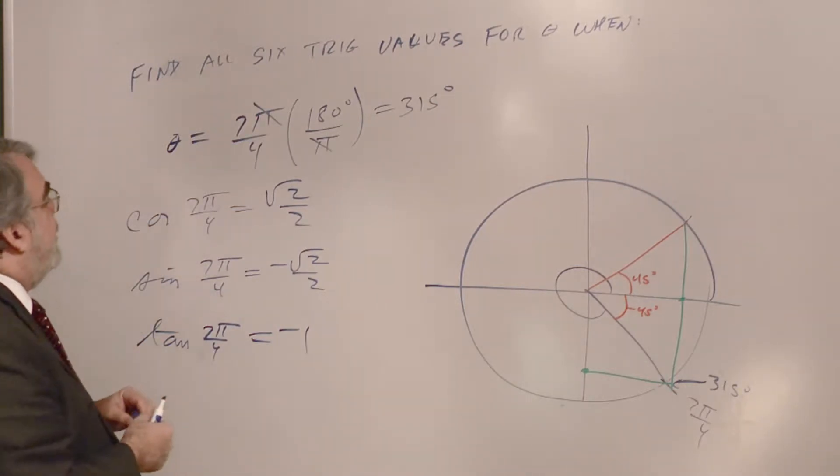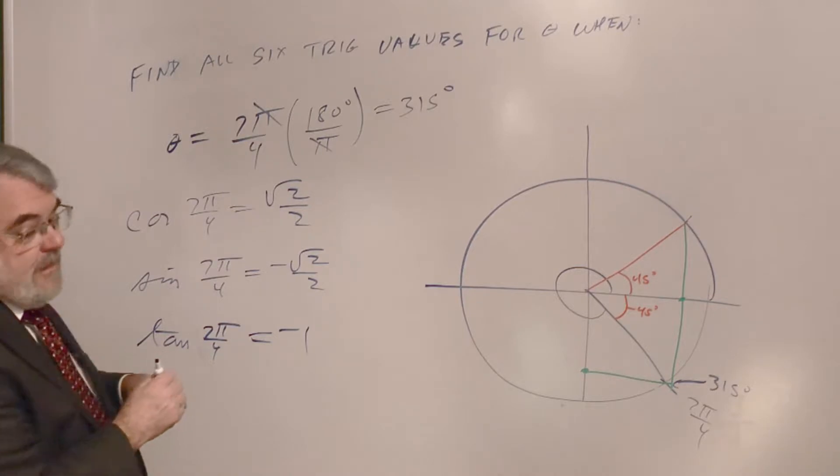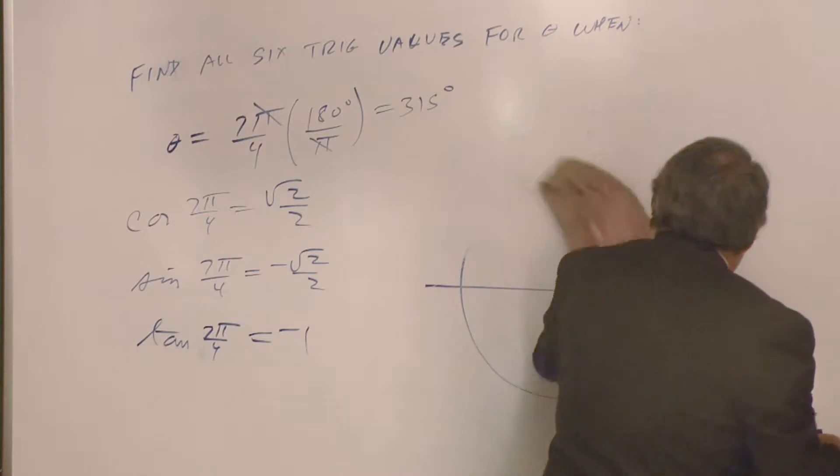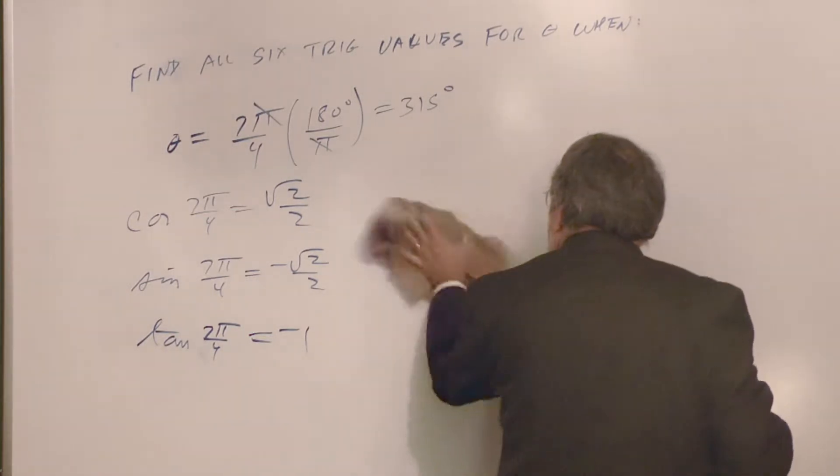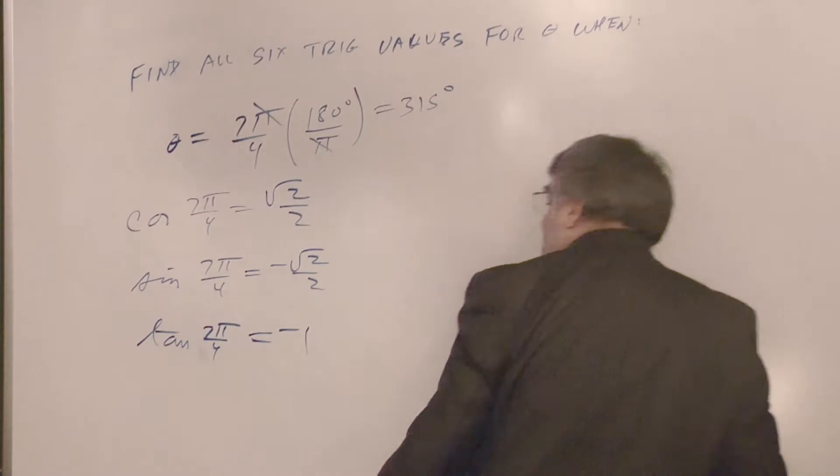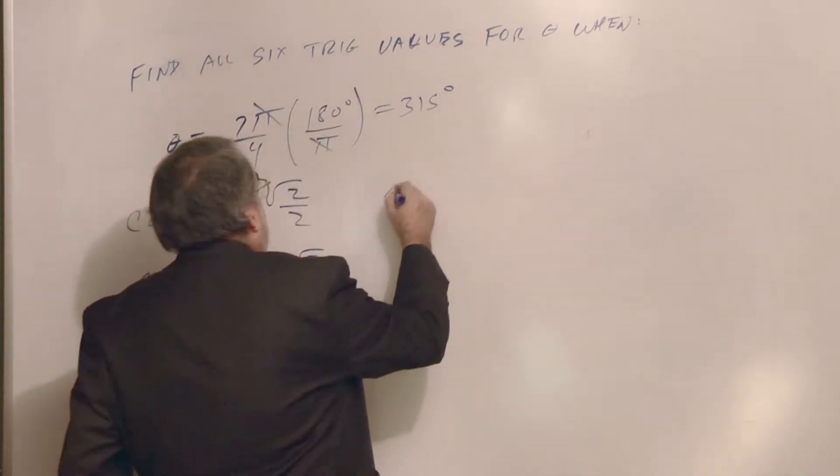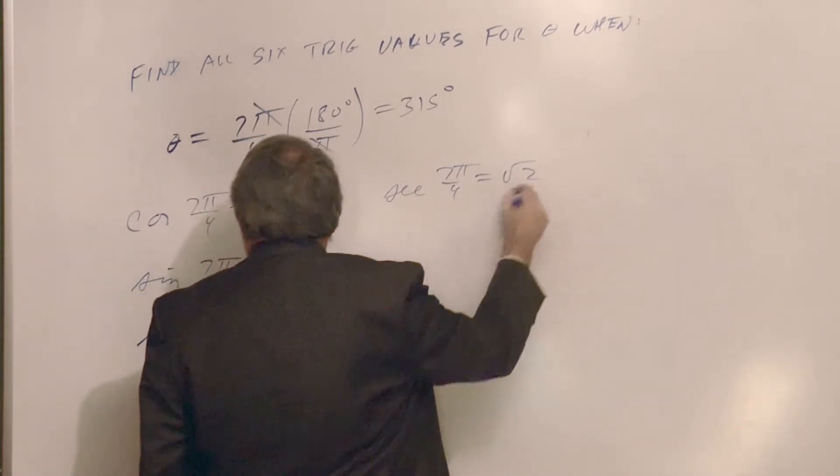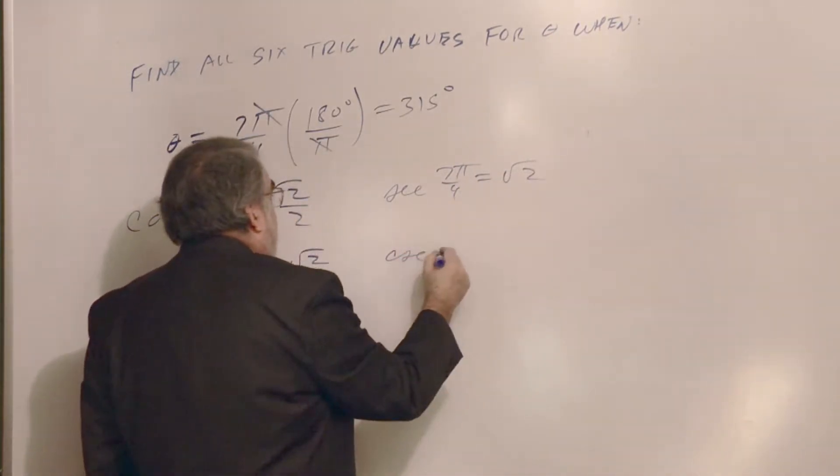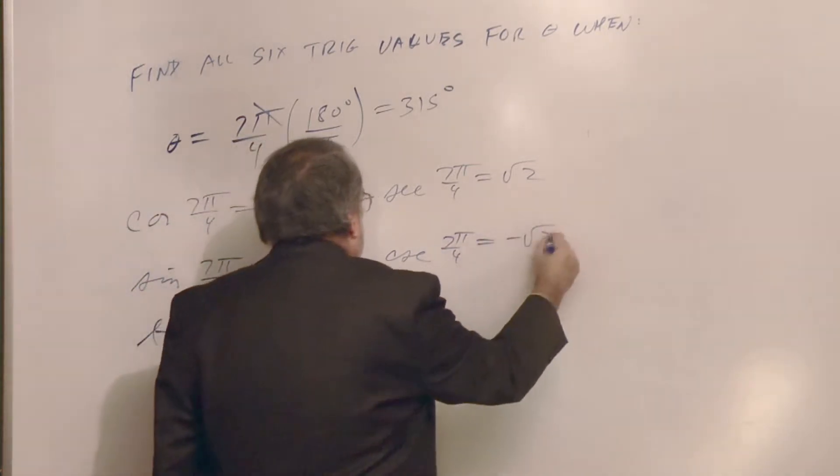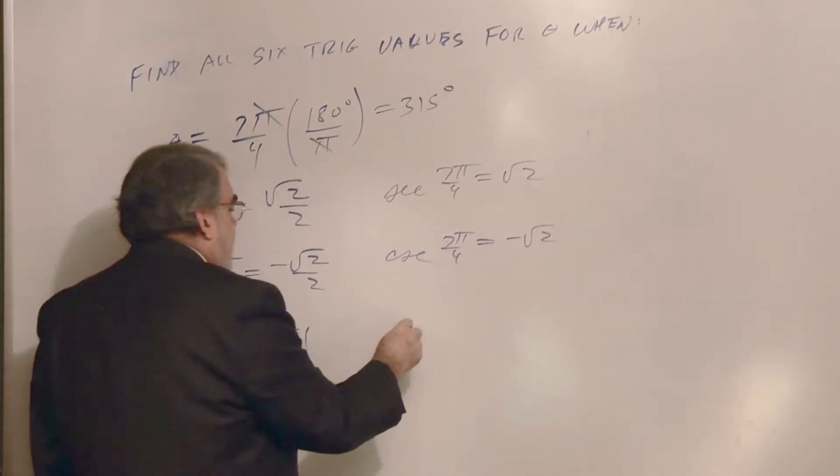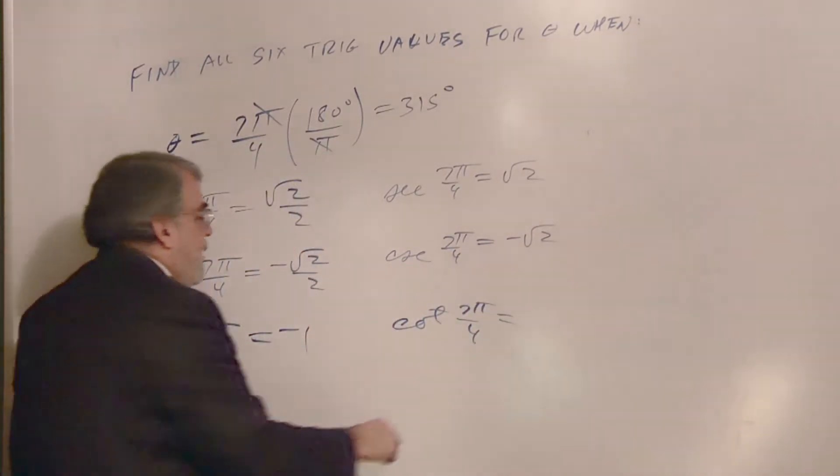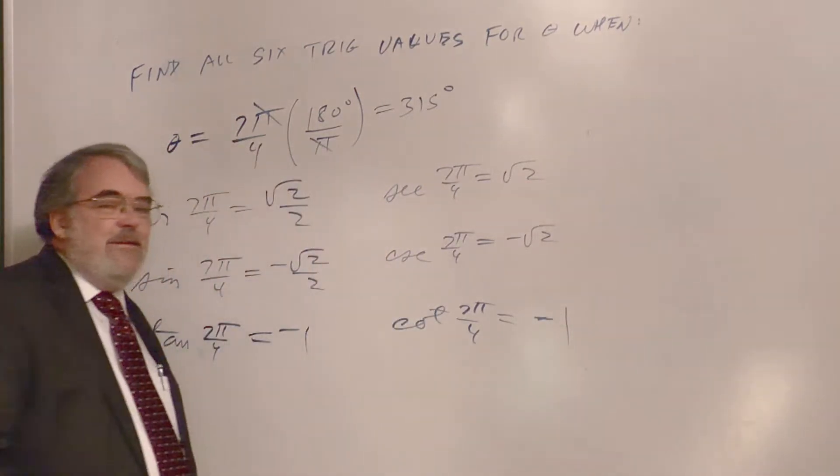Alright, and then the rest of this is just inverting these. So let's go ahead and knock those out. In earlier videos, when you invert the square root of 2 over 2, you just get square root of 2. So the secant 7π over 4 is square root of 2. The cosecant 7π over 4 is minus the square root of 2. And cotangent 7π over 4, 1 divided by negative 1 is negative 1.